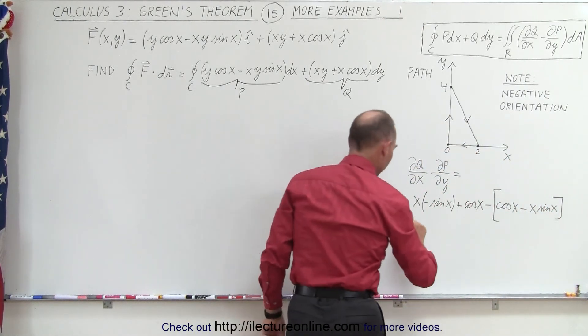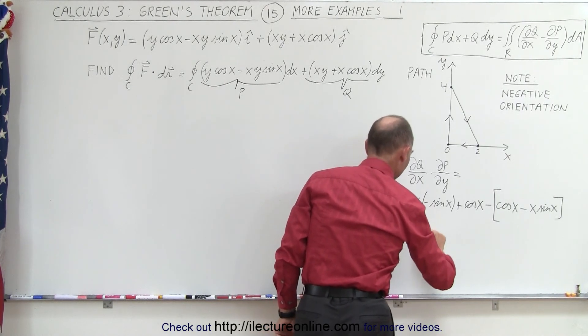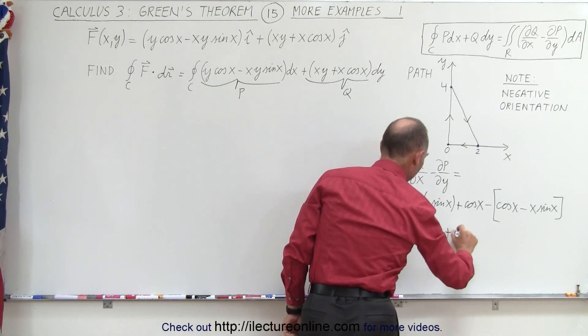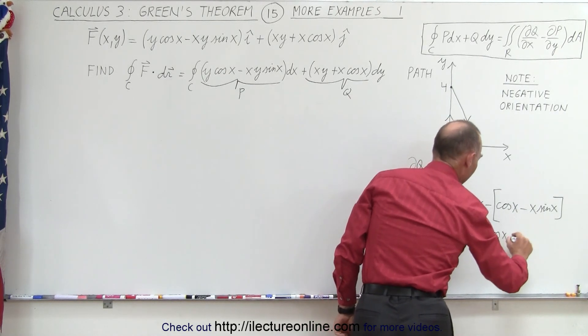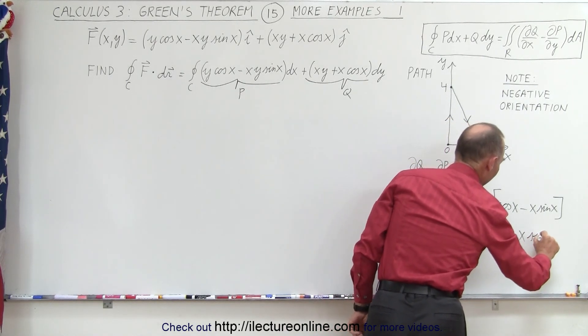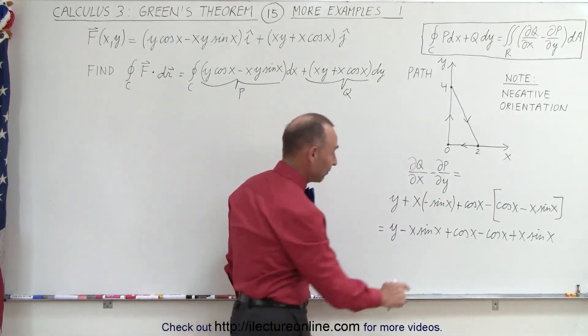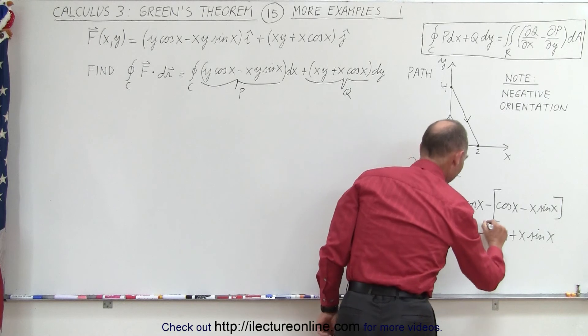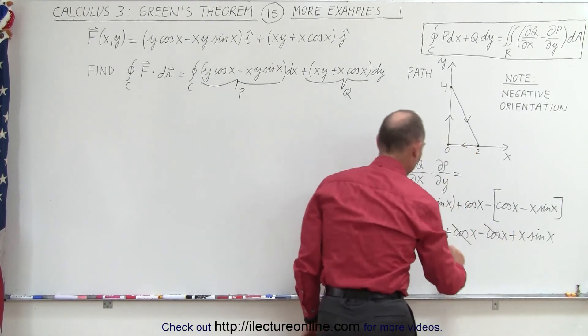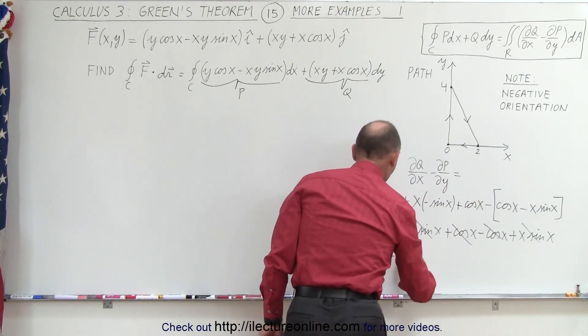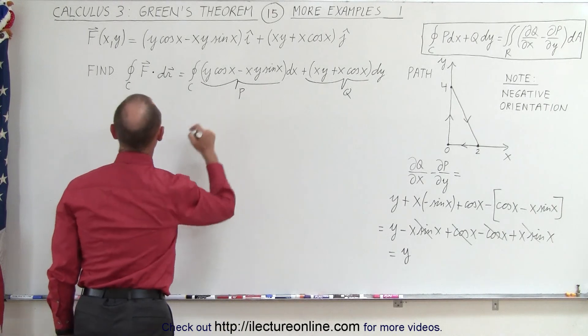And if we simplify that a little bit, this will look as follows. This is Y minus X times the sine of X plus the cosine of X minus the cosine of X and plus X times the sine of X. And luckily, a bunch of things cancel out. So we have the cosine and negative cosine, they cancel out. And a minus X times the sine of X and a plus X times the sine of X, they cancel out as well. And so essentially, this equals Y.